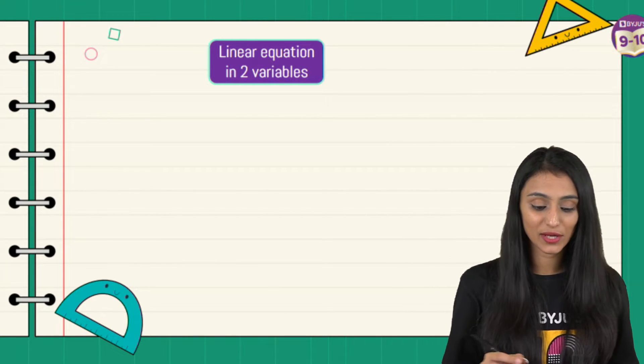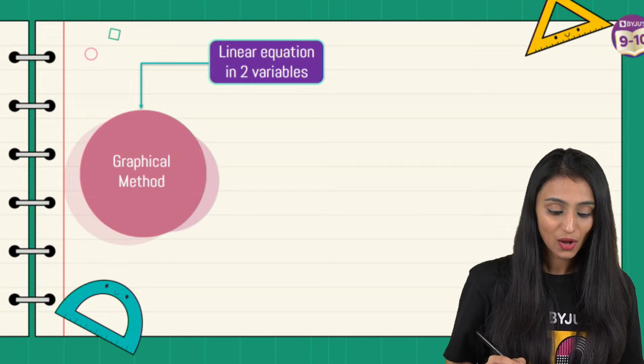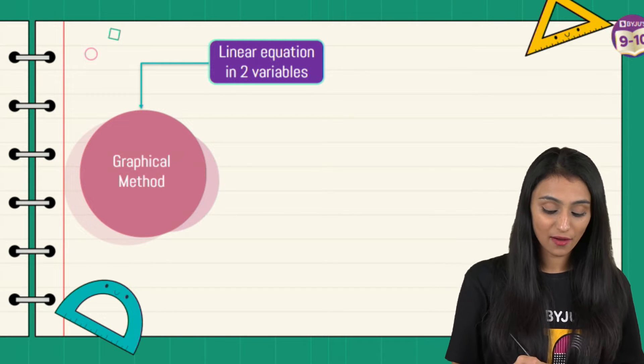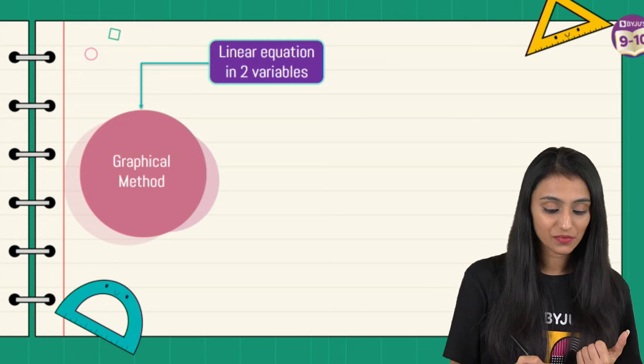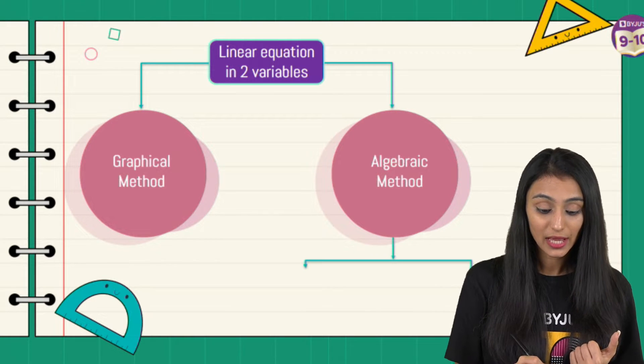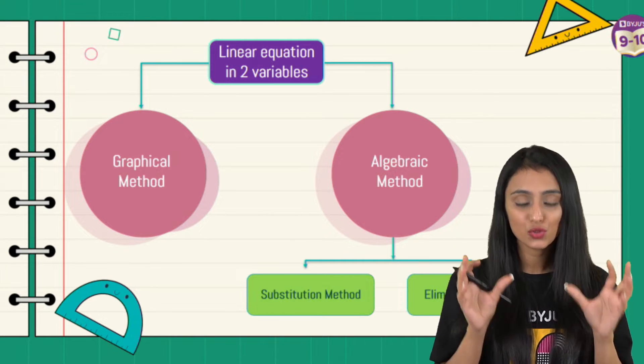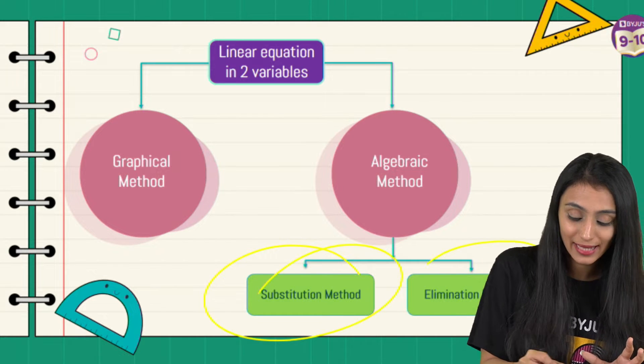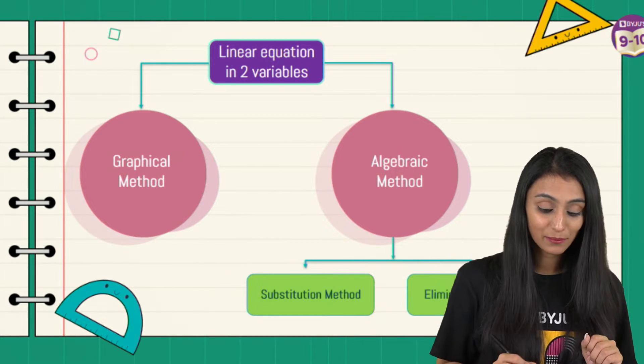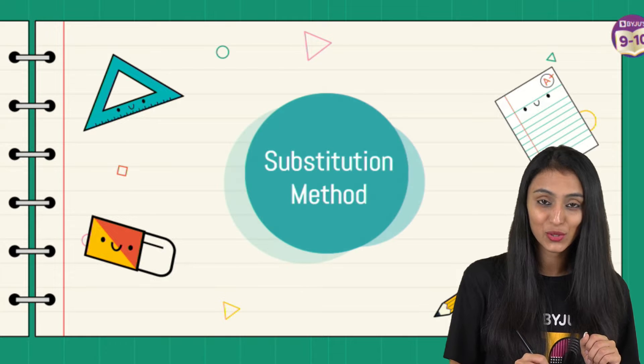Now let's discuss the substitution method. This is from your chapter on linear equations in two variables. Basically, we have to find out the value of the unknowns. We have the graphical method as well as the algebraic method.